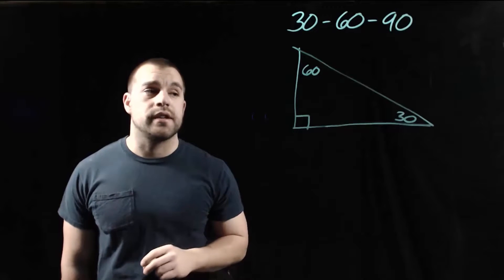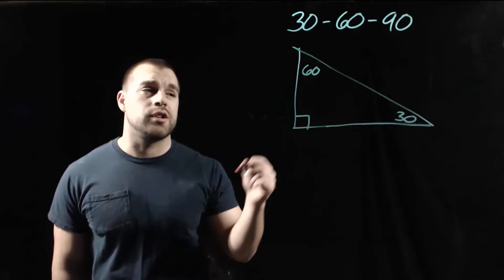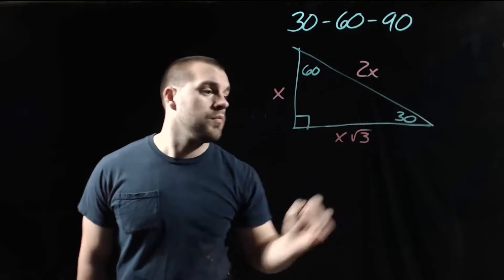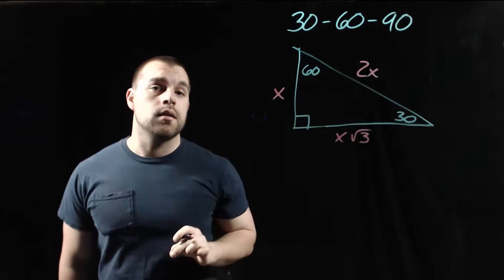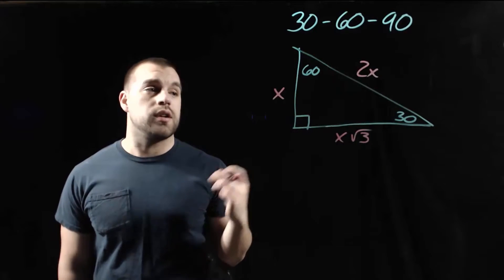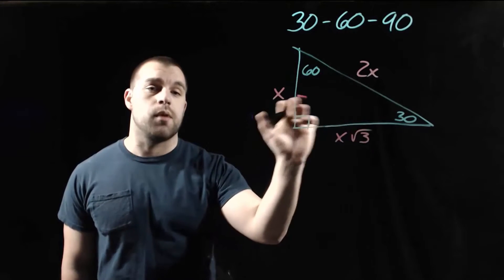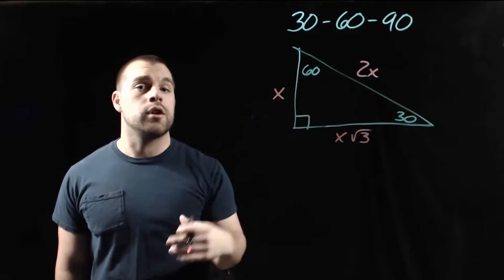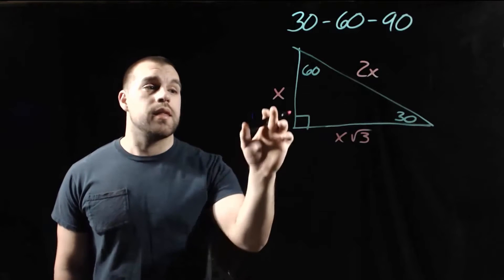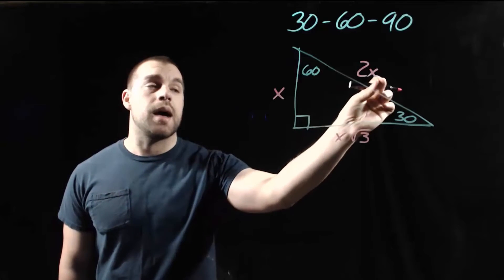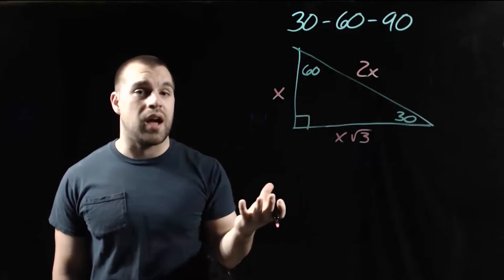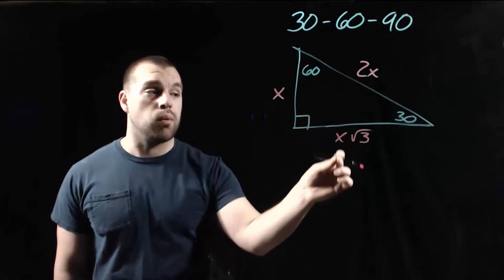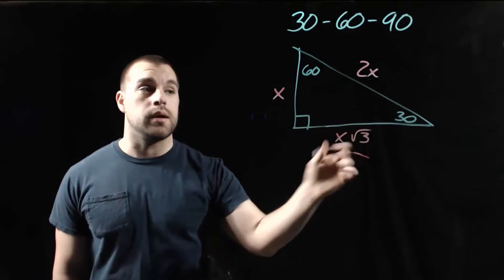In the 30-60-90 triangle, the side-length relationship looks like this. We let the short leg — across from the smallest angle, across from that 30-degree angle — be our x value. Then to find the hypotenuse, we take 2 times x. And to find the length of the longer leg, we take x times the square root of 3.